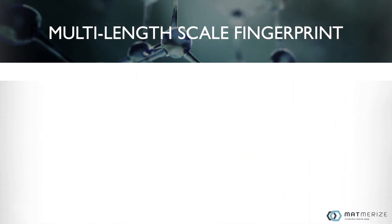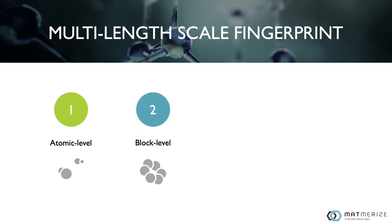Our fingerprint represents the polymeric material on different levels. The atomic level considers each individual atom. The block level takes into account functional groups and repeat units. The chain level describes the shape of the polymer molecule.